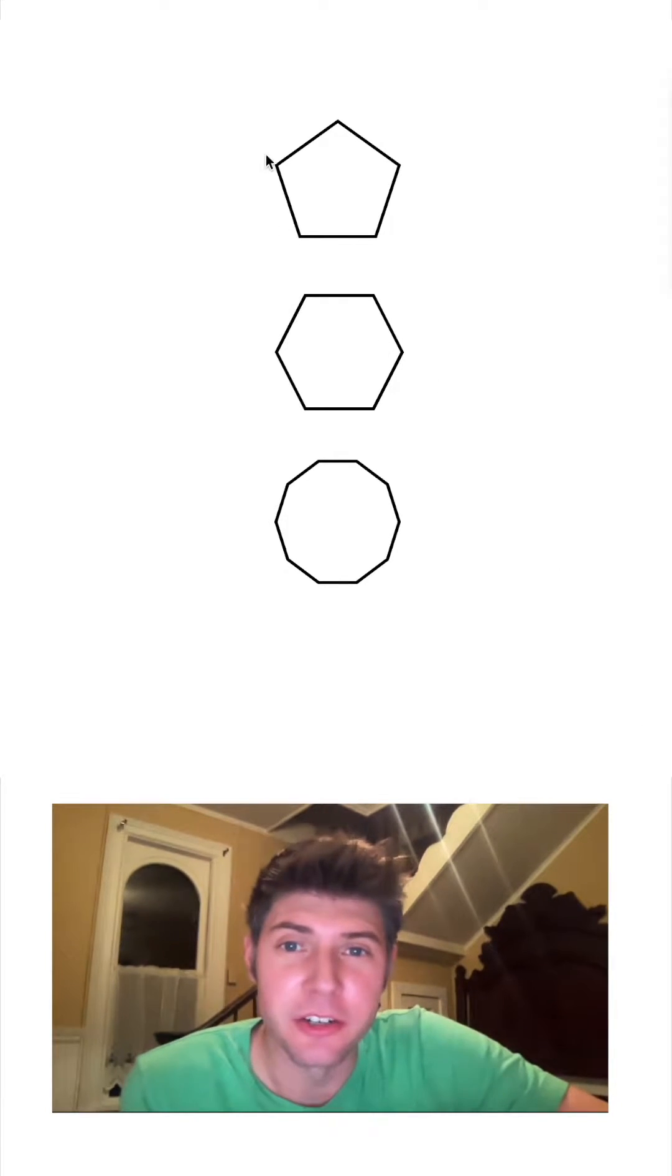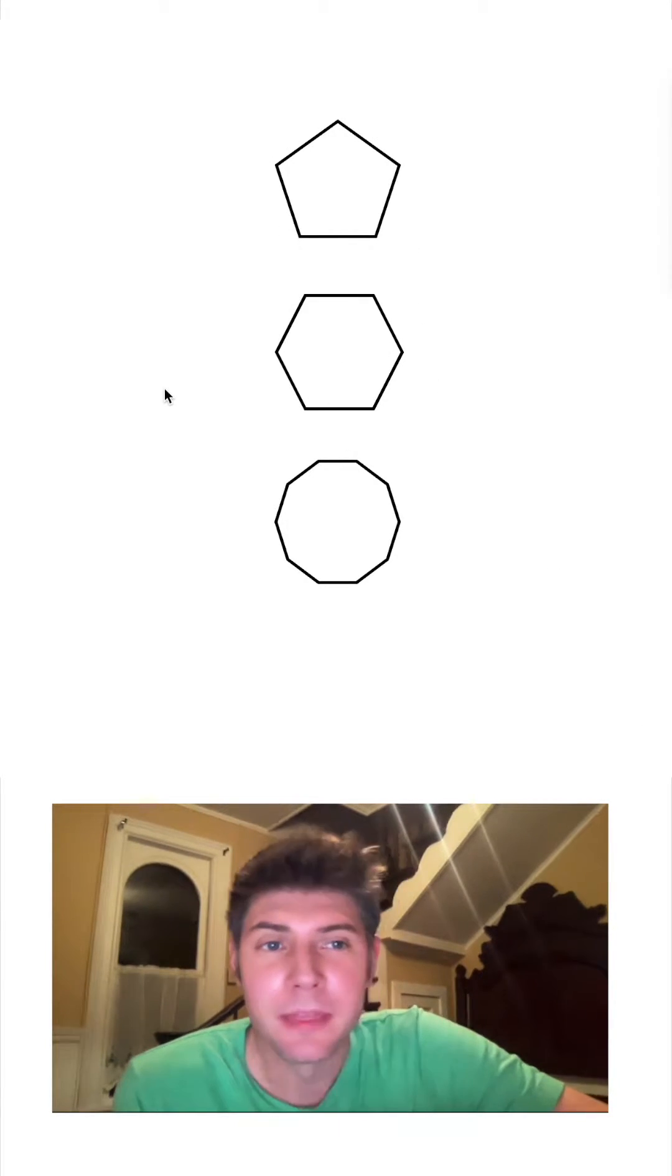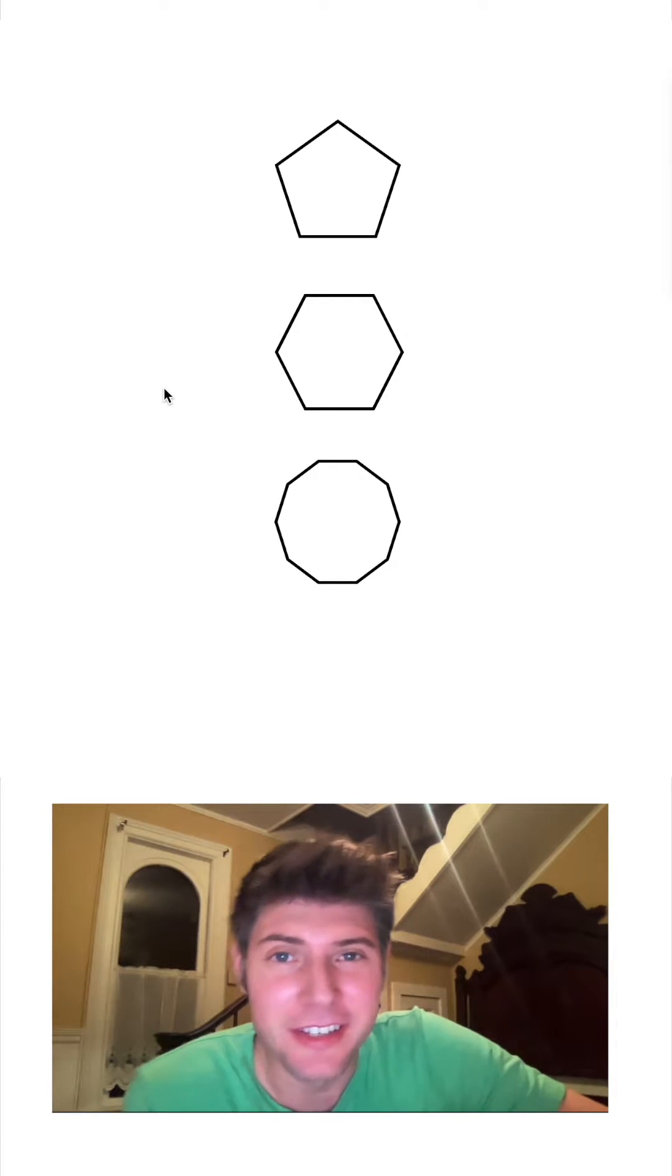Hey guys, so these are called regular figures. All the sides are the same length. There is a formula to find the area of these, and that is one half apothem times perimeter.